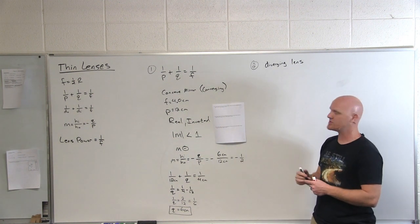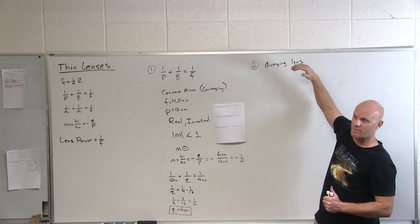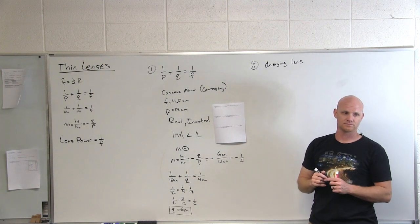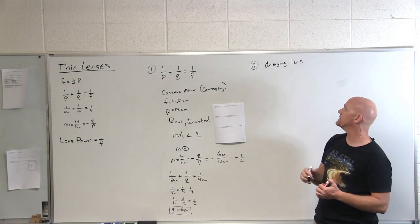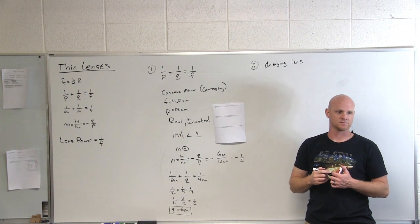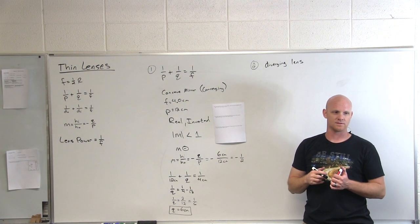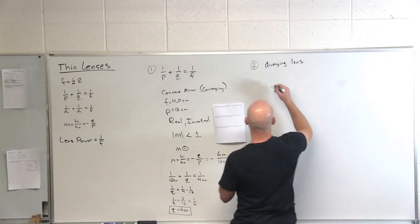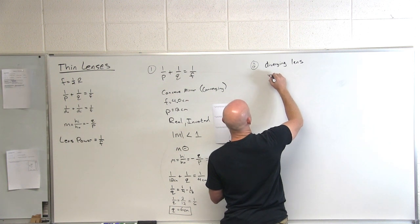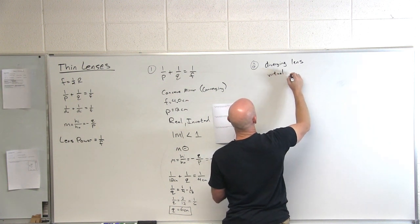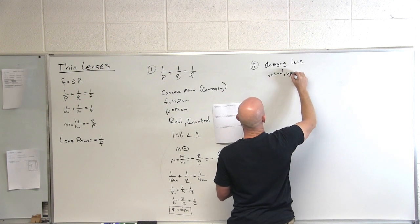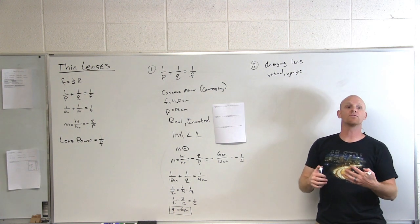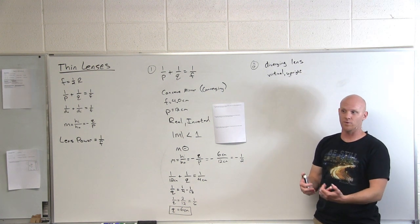Question number two, we're dealing with a diverging lens. Before we get into the specifics, what do you know about a diverging lens? Your diverging lens will be a concave lens. Do we always get the same kind of image, or does it depend on where we place the object? Always the same. Because diverging lens means the rays always diverge, they never really converge on the same point, so you never get a real image.